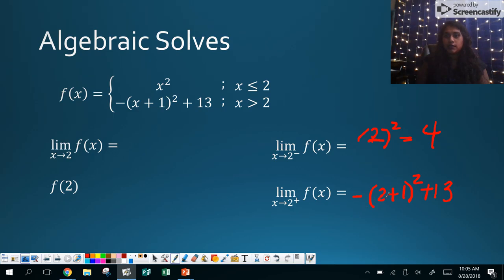So that's negative. This is 3. That's 9. So negative 9 plus 13 is 4. So the limit from the left equals 4. The limit from the right equals 4. That means the limit at that point equals 4. Because the limit from the left and the limit from the right equal each other. You can put your justification.